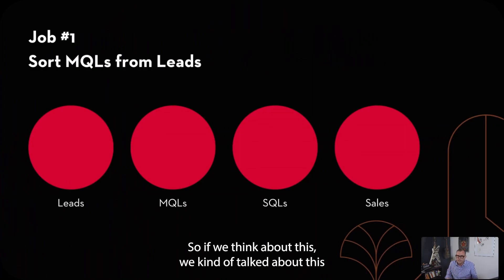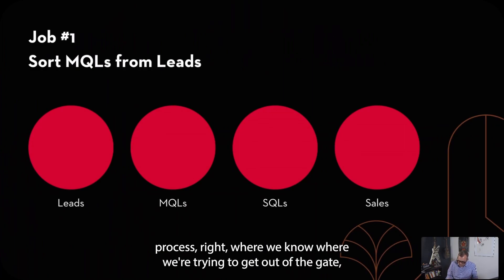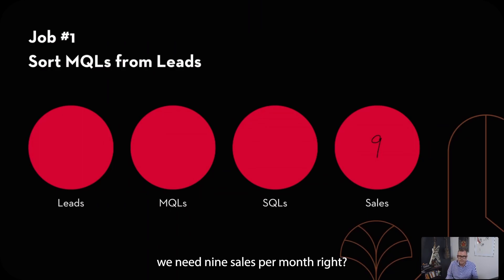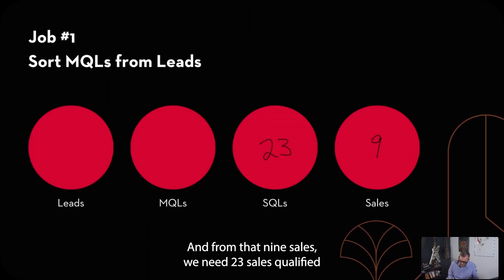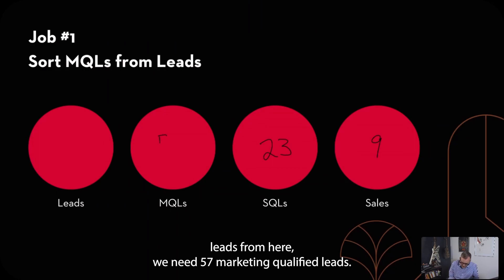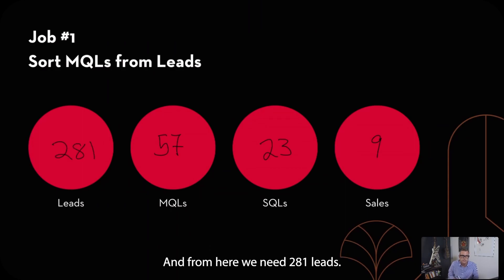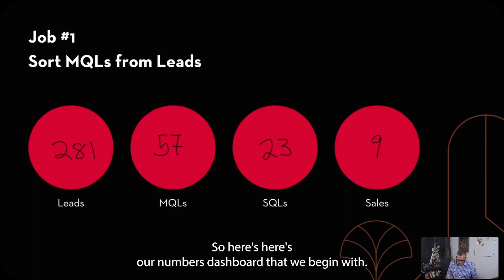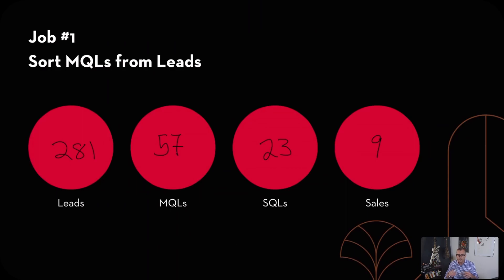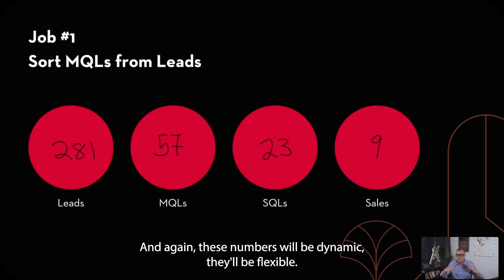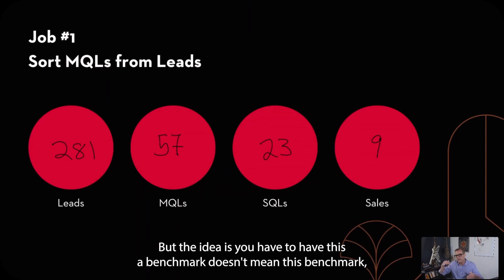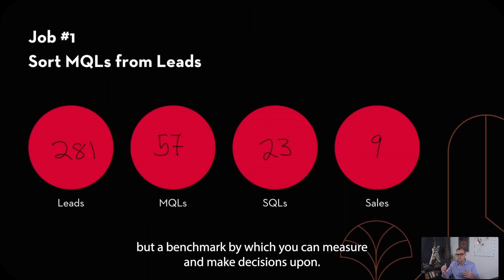We know we need to get out of the gate with nine sales per month. From that, we need 23 sales qualified leads. From there, we need 57 marketing qualified leads. And from there, we need 281 leads. This is our numbers dashboard that we begin with — as a founder, this is where you need to start. These numbers will be dynamic and flexible, but you have to have a benchmark by which you can measure and make decisions.